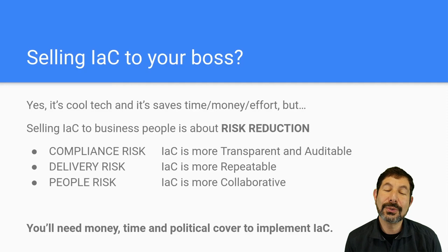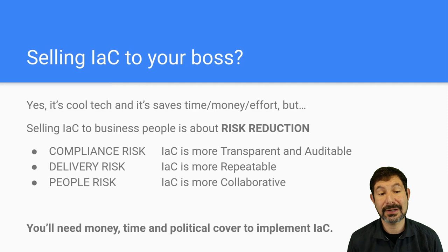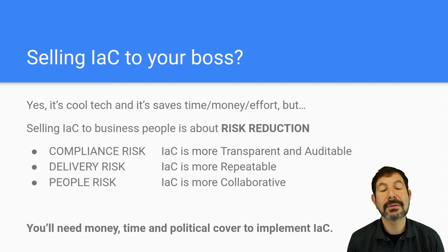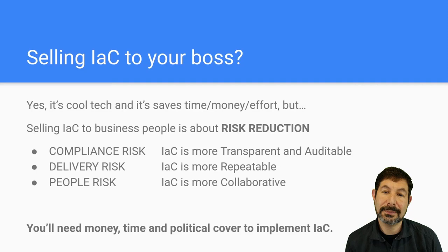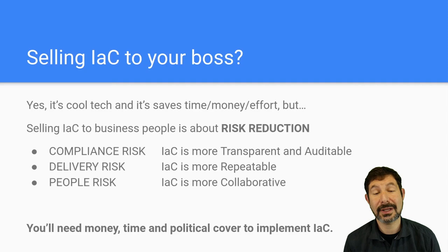It is cool technology and it does save time, effort, and money. But if you want to talk to business people about infrastructure as code, the language here is about risk reduction. Infrastructure as code creates more transparent and auditable systems, so they are more compliant and they reduce your compliance risk. They are more repeatable, so they reduce your delivery risk, meaning that you can deliver systems, code, and infrastructure more confidently. And critically, they're more collaborative — they reduce the bus factor of your organization and reduce your people risk, because everything you do can be translated and repeated for multiple people. I really believe that infrastructure as code is a collaboration story, more than any other technology component.